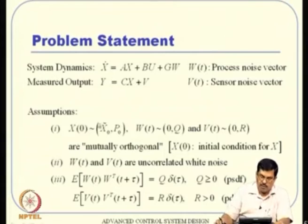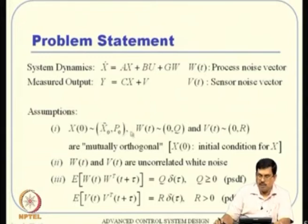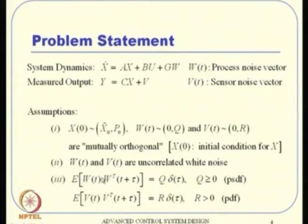Before proceeding, here are the assumptions. The initial condition x(0) has mean x_tilde_0 and covariance P_naught. The process noise w has zero mean and covariance Q, meaning E[w(t)·w(τ)^T] = Q·δ(t−τ), so if τ≠0 it equals zero. The sensor noise v has zero mean and covariance R. These are the standard statistical properties assumed in Kalman filter theory.